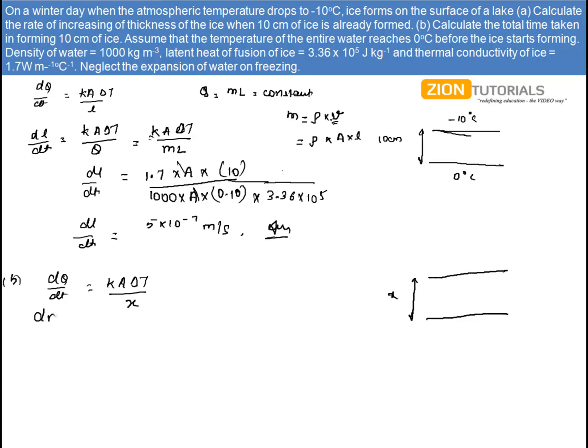Now q is again mL. So it can be written as this, KA delta T by x.